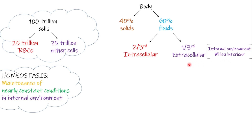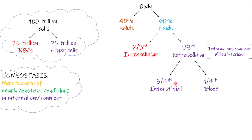Extracellular fluid is further divided into interstitial fluid and blood. Interstitial fluid is three-fourths of the ECF and blood is one-fourth of the ECF. The fluid surrounding the cells — interstitial fluid — accounts for three-fourths, while blood accounts for one-fourth.